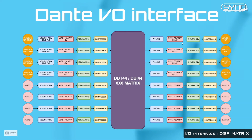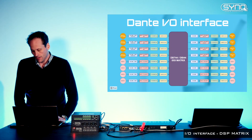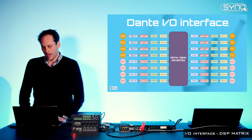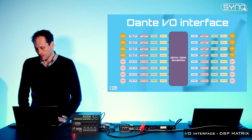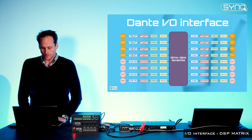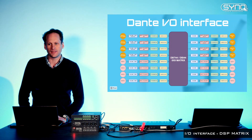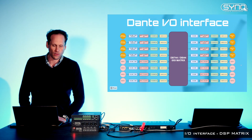On top of the mute and polarity for analog output, we have delays, which is very handy when you have multiple speakers in the room and you want to achieve very good coherence in your waveform. You can set the delay according to the distance between the speakers. We also have 10 parametric EQs on the output and the same compressor/limiter. Only for analog XLR connector output, but you also have it for Dante output, so you could technically connect an additional DBT04 and get 4 additional analog outputs.